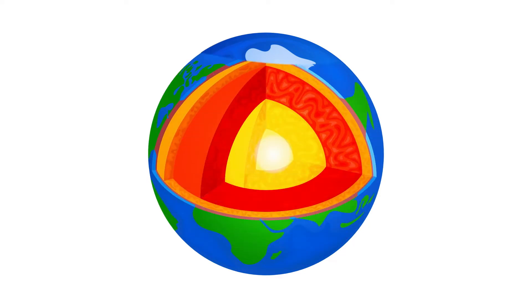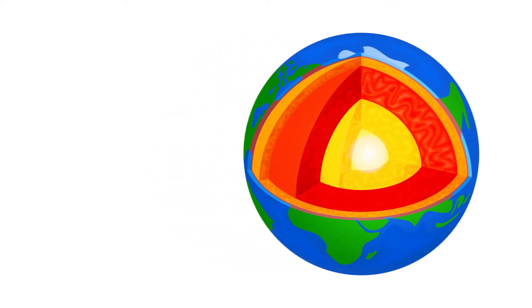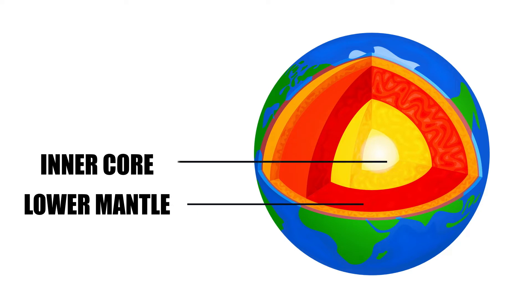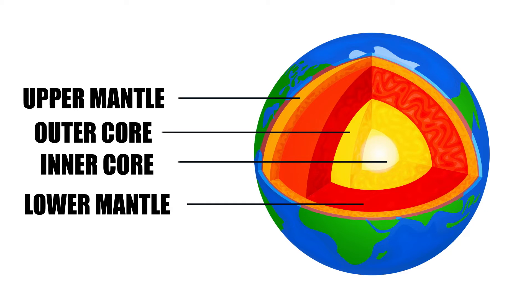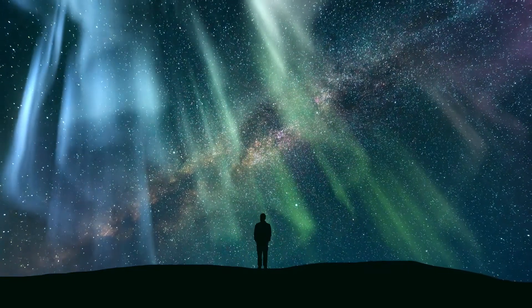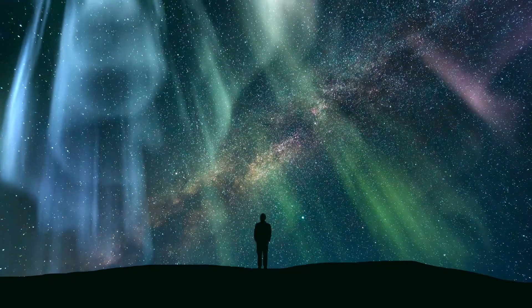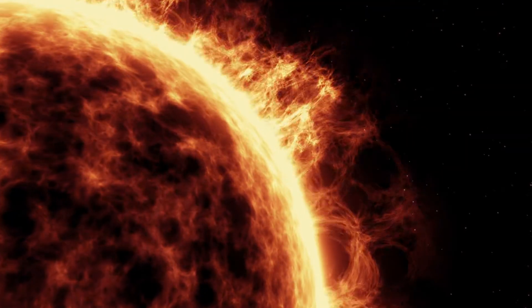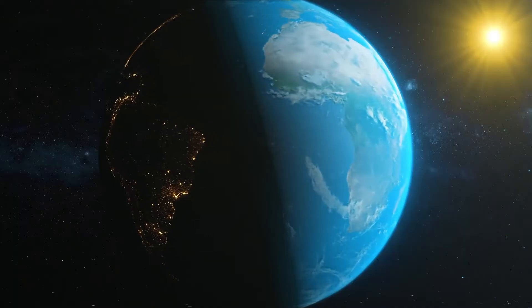The core of the Earth plays an important role in both the structure and functionality of our planet as a whole. Both the solid inner core and the liquid outer core are predominantly composed of iron and nickel. It is composed of a solid inner core that is surrounded by a liquid outer core. The motion of this molten metal is what forms the magnetic field of the Earth, which is absolutely necessary for shielding us from the potentially lethal impacts of solar radiation and cosmic rays.